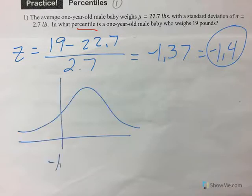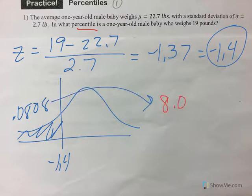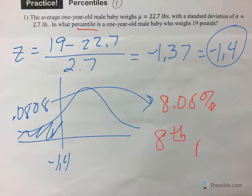Here's negative 1.4. The area to the left is 0.0808. As a percent, that is roughly 8.08%, which means we are in the eighth percentile.